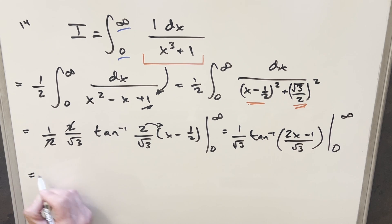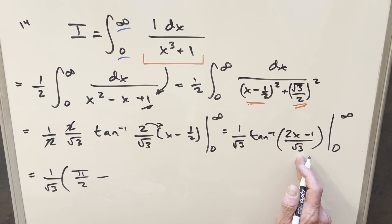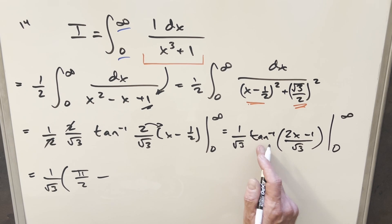So for our evaluation, let's pull the 1 over square root of 3 out front here like this. When you plug in infinity, Arctan at infinity, that's going to happen at pi over 2 minus. Plugging this 0 in here, we're going to have this become minus 1 over square root of 3. Arctan of minus 1 over square root of 3, that's going to happen at minus pi over 6. Minus times minus is plus.